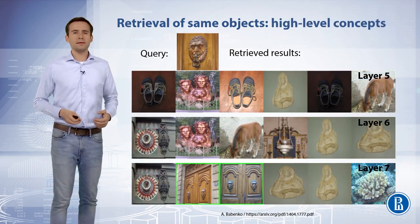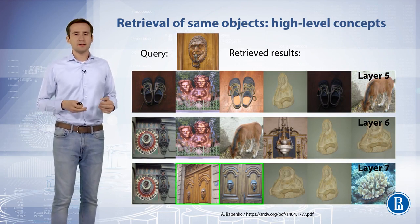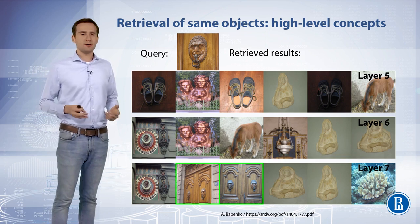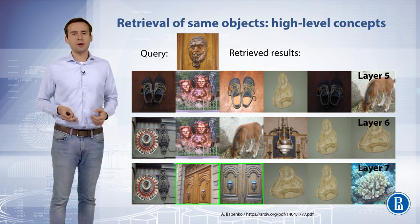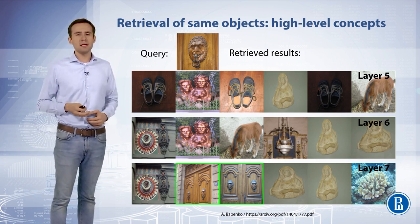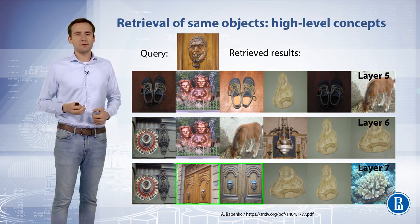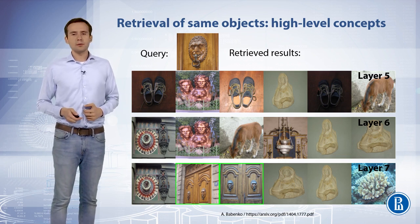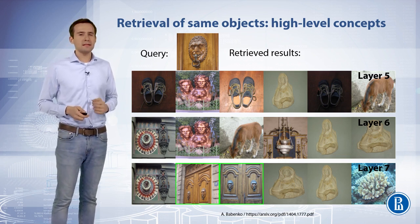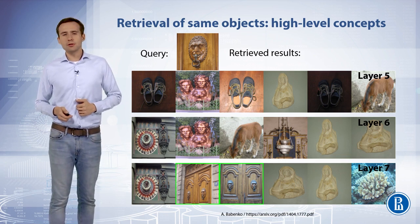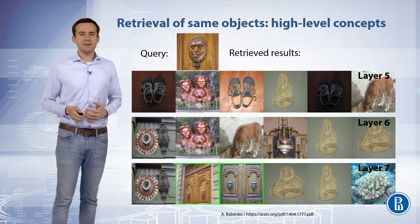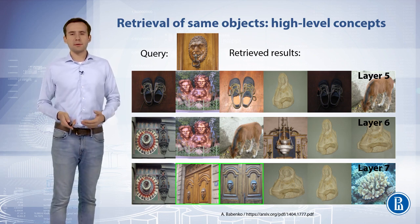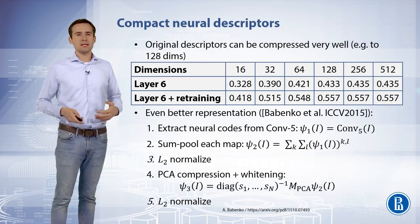On the other hand, representations deeper in the network give better retrieval results when searching for objects appearing at a variety of scales, presumably because of their reliance on higher-level concepts. In this example, a door handle in the shape of a lion's head is the object being searched for, and only activations from deeper levels are abstract enough to retrieve such representations.